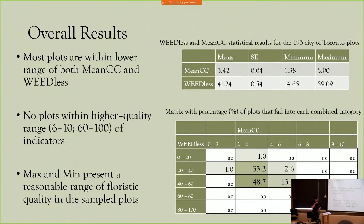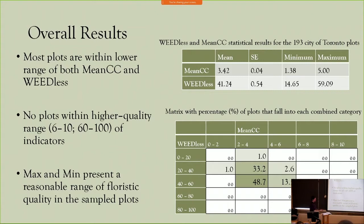These are the preliminary results. Of the 193 City of Toronto plots, the range of scores occupies a mid to lower range on these indicators. Roughly half of all plots fell into the mean CC score of two to four, while also falling into the weedless score of 40 to 60 — around the mid to lower range. There are no plots within what you might call the higher quality range, which isn't entirely surprising given that centuries of degradation mean that Toronto's natural areas are not truly representative of their pre-settlement condition.